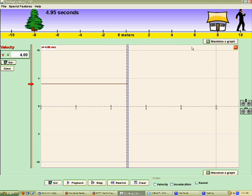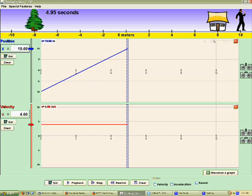Now let's look at the position versus time graph. Here we see that it has a positive slope corresponding with a positive velocity. But is it really four meters per second? Let's find out.